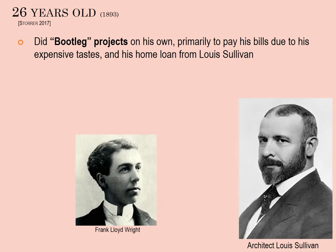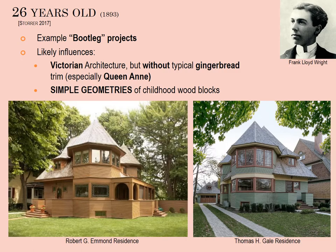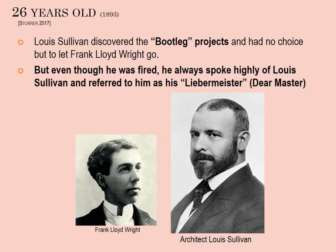Back to the timeline. In his 20s, Wright is working for Louis Sullivan and doing very well. However, he starts doing some bootleg projects not known by the firm — presumably to pay the bills, including the private loan to Sullivan, plus he has some extravagant tastes. He gets commissions for these bootleg houses — there are actually three. You can see the Victorian era influences, but he doesn't like all the frill of Victorian, including all the gingerbread of typical Queen Anne Victorian. He emphasizes simple geometries.